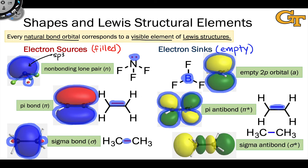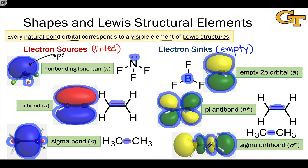Finally, we can associate every sigma bond or single bond in a Lewis structure with a sigma antibonding orbital. For example, the CC single bond in ethane can be associated with a sigma antibonding orbital. These often look like two hybrids or two P orbitals pointing directly at each other but with opposite phase, so there is a node perpendicular to the bonding axis between the nuclei, and very large lobes outside of the nuclei — the inverse of the sigma bonding orbital. These are the six standard orbital shapes of NBO theory.